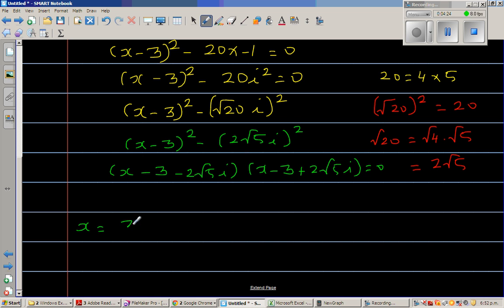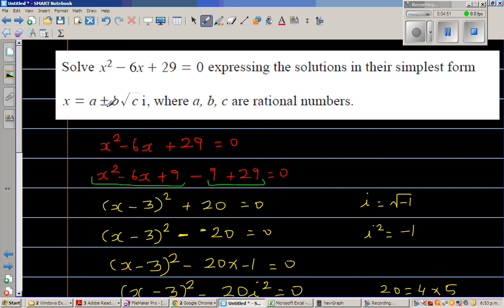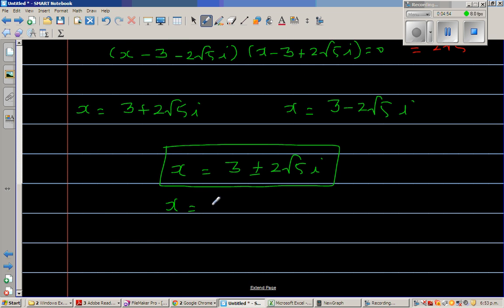I can say x is 3 + 2√5 i or x is 3 - 2√5 i. So the final answer is x = 3 ± 2√5 i. They wanted us to write it like a ± b√c i. Comparing with this, your a is 3, your b is 2, and your c is 5.